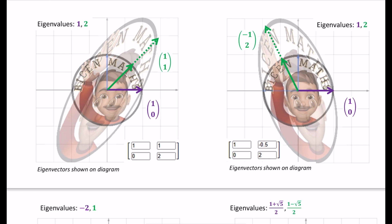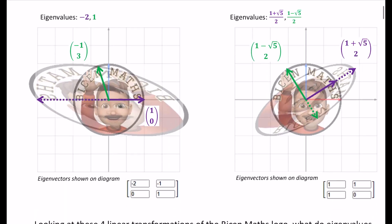The original image is the unaltered Bison Maths logo, and then there has been the transformation [1, 0; 1, 2] applied to it. I've labelled in purple the eigenvector (1,0), and in green the eigenvector (1,1), along with their eigenvalues. Pause the video and see if you can think about what might be going on.